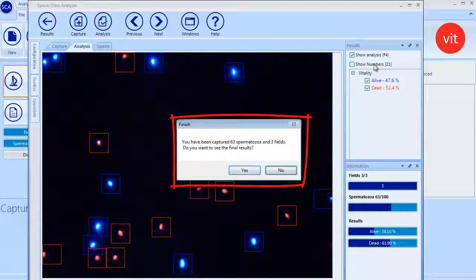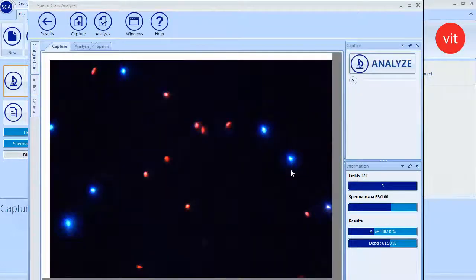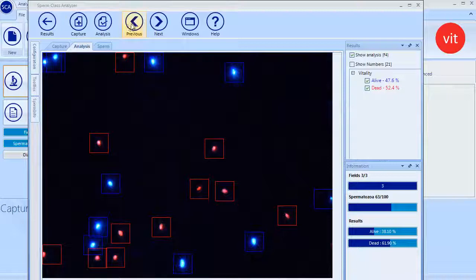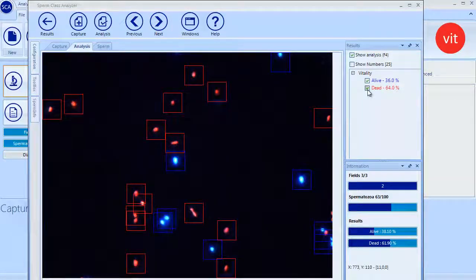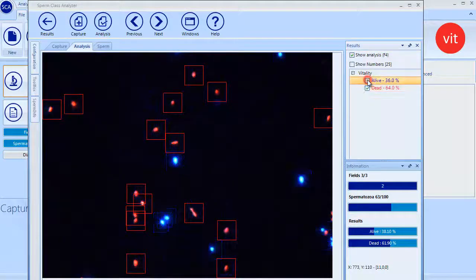Once the desired number of spermatozoa is analyzed, a message is displayed. All captured images are displayed in the analysis tab. By marking or unmarking results checkboxes, we can display or hide the spermatozoa of the vitality analysis.